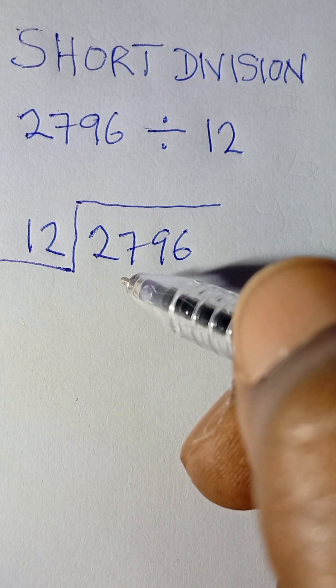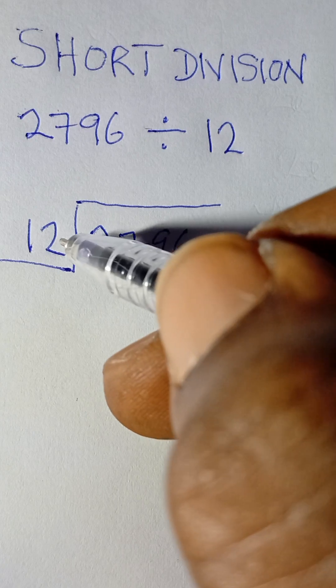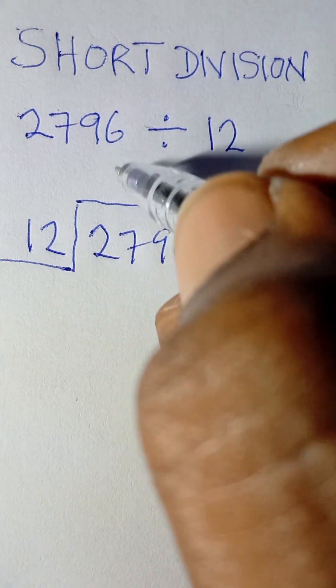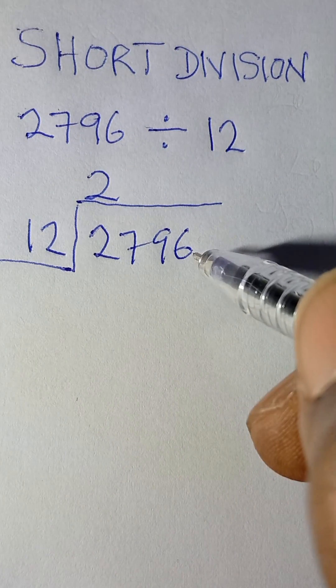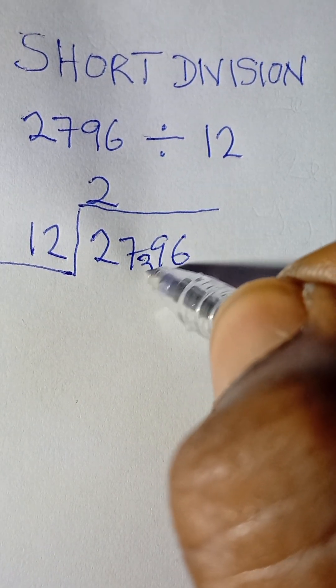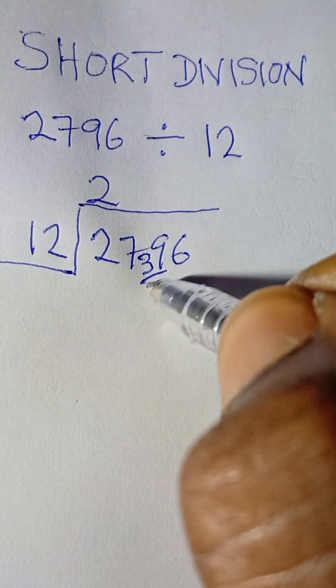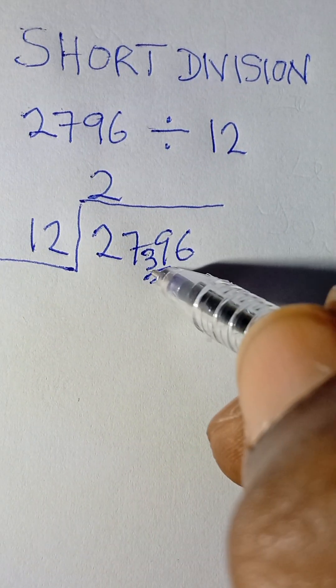...be 2 times remainder 3, because 2 times 12 is 24. So 27 divided by 12 is 2 times. We'll put the 2 at the top of the bar, remainder 3. That 3, which is the remainder, we can put it here to make this number 39.